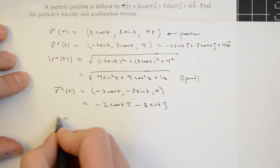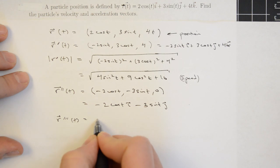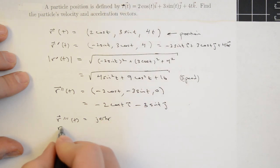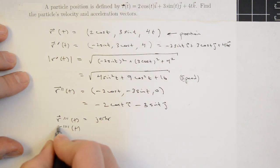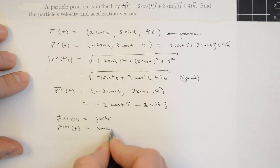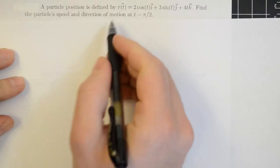The third derivative would be the jerk, the fourth derivative is called snap, the fifth derivative is crackle, and the sixth derivative is pop — snap, crackle, pop.